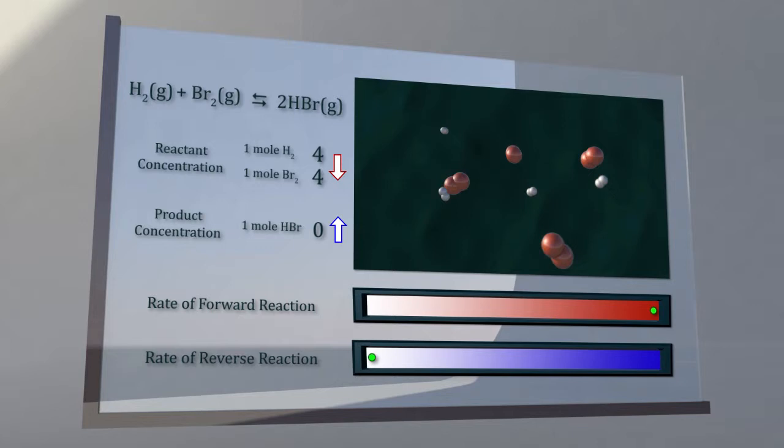Once hydrogen bromide gas is present in the vessel, the reverse reaction of hydrogen bromide gas producing hydrogen and bromine gas begins to take place as well.